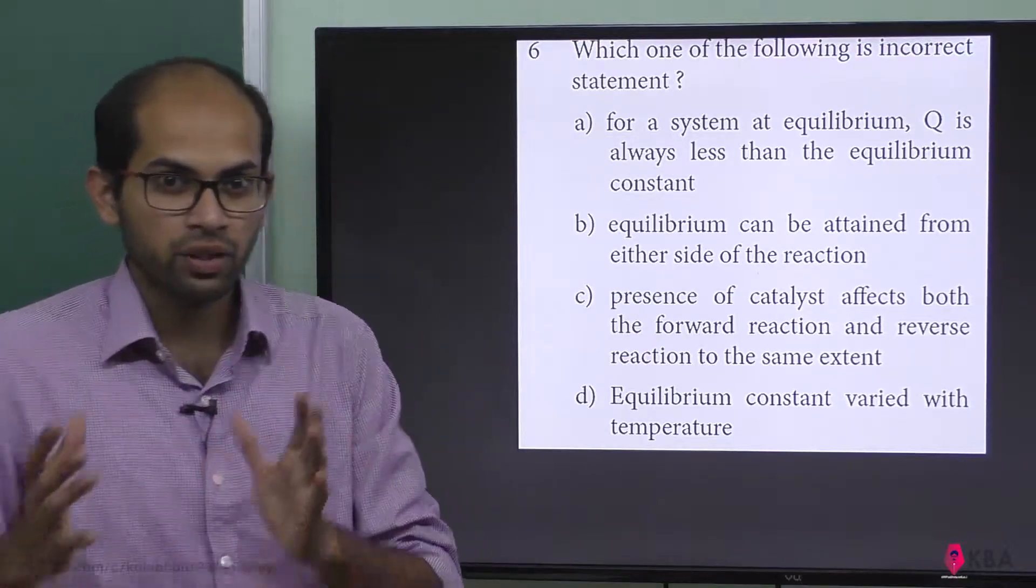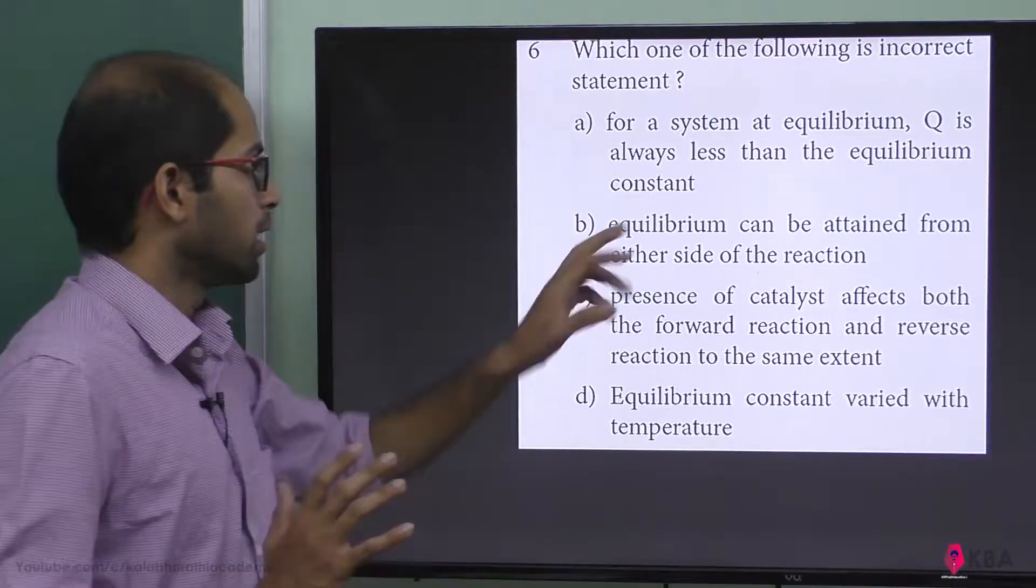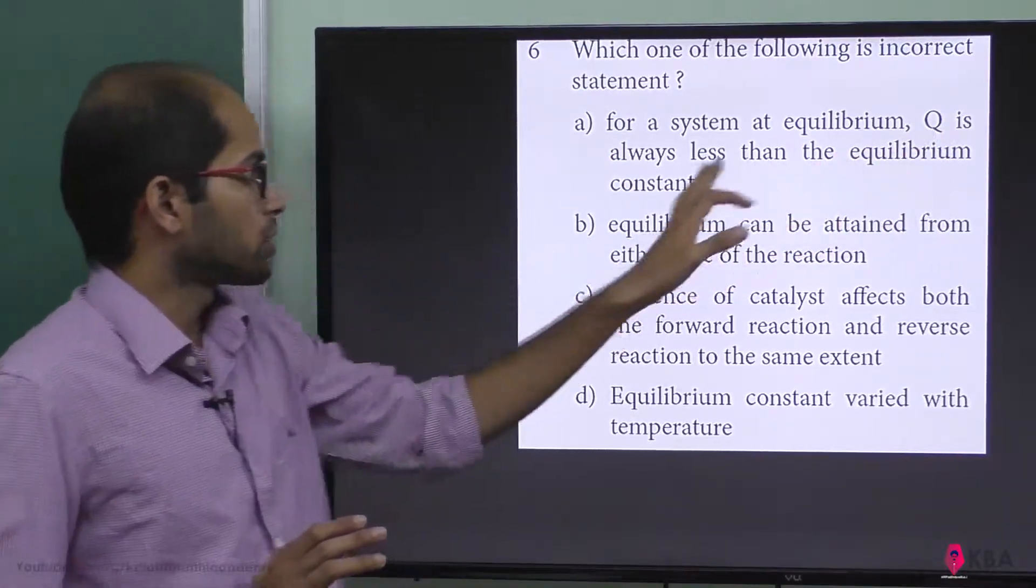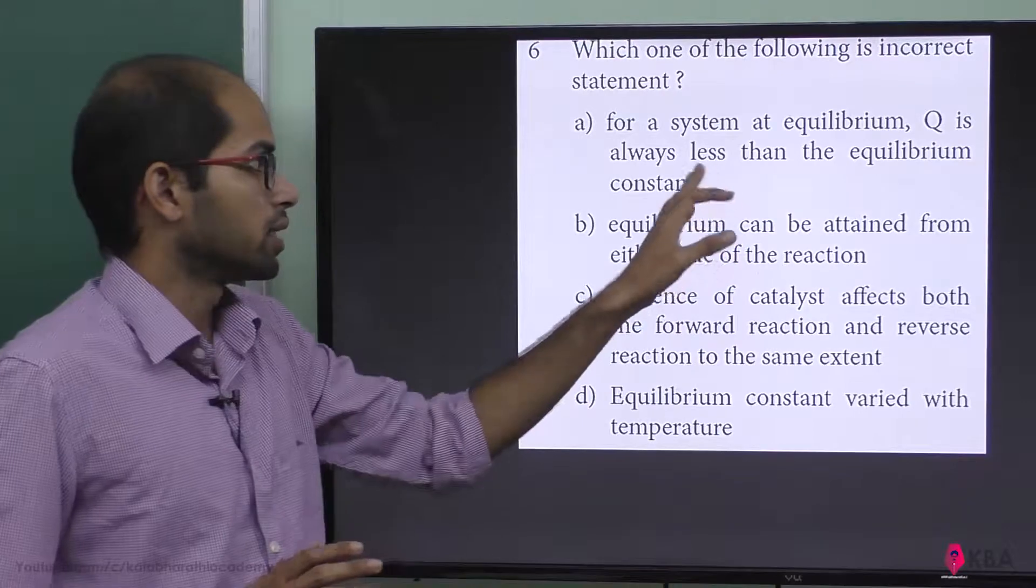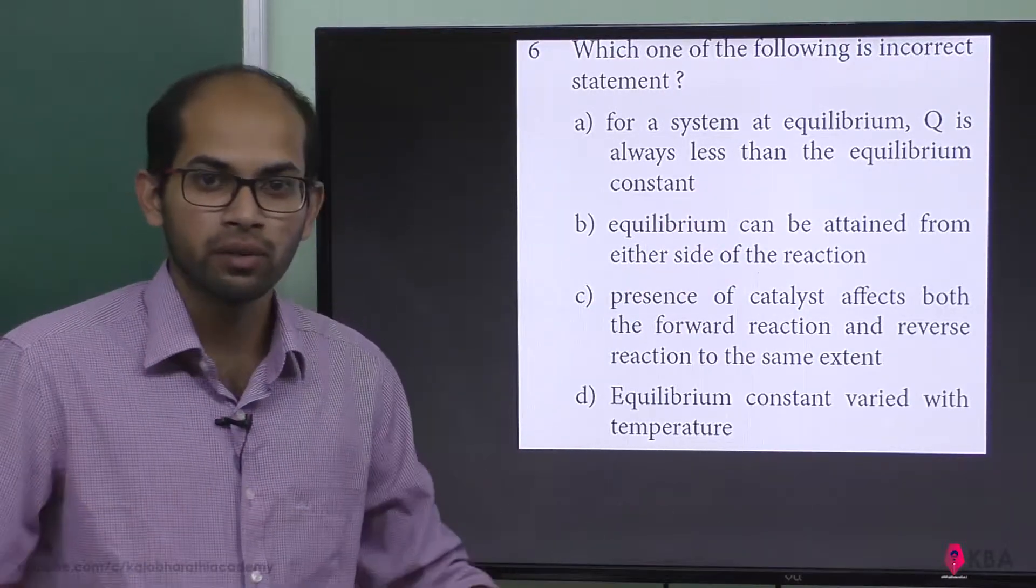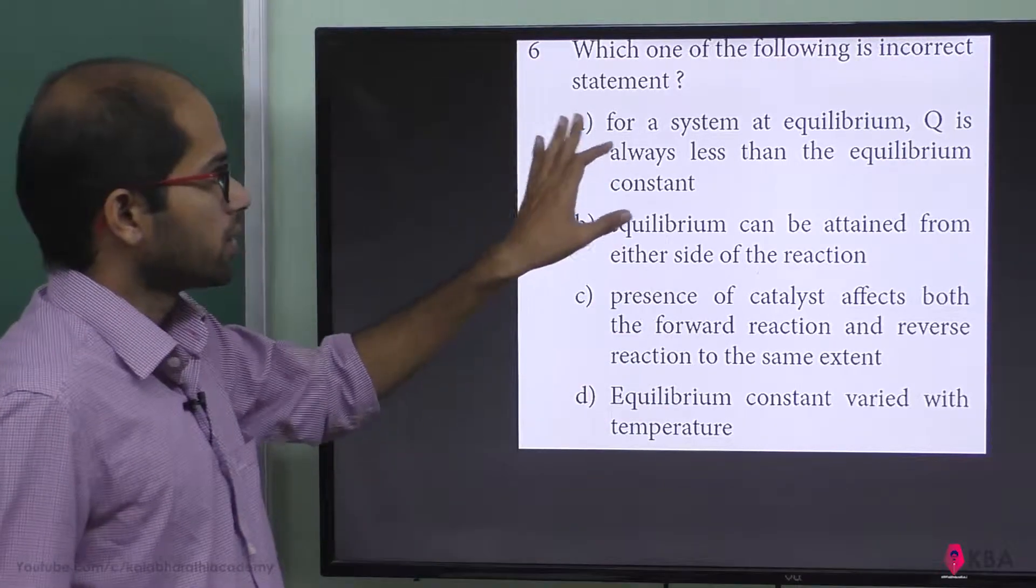At equilibrium attainment, Q equals Kc. For a system at equilibrium, the statement says Q is always less than the equilibrium constant. But at equilibrium, Q equals Kc, not less than. So this is incorrect.